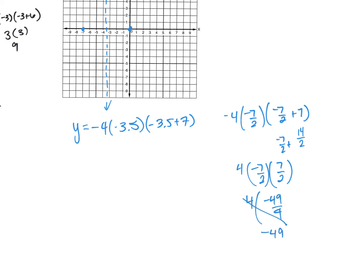So I get four times negative 49 over four. The fours cancel and we get negative 49. And I had lots of people actually calculate that correctly and they're like whoa, this is really big, I'm not sure that this is correct. And it is because your intercepts are pretty far away from each other, right? There's seven units away from each other. And your coefficient a is a negative four.